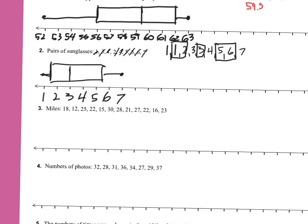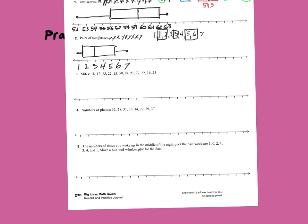Looking at that box and whisker plot, the left whisker is bunched together — just 1 and 2. Then Q2 is more spread out from 1.5 to 3. The Q3 section from 3 to 5.5 is the most spread out, and the right whisker from 5.5 to 7 is about tied with the left side. That's all there is to making a box and whisker plot: find your five-number summary, place your dots at min and max, draw vertical lines at Q1, median, and Q3, and form the box.